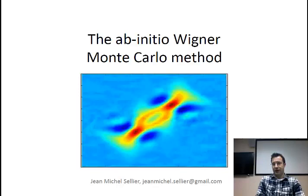In this lecture we will talk about the Ab Initio Wigner Monte Carlo method. This is a Monte Carlo method for the many-body Wigner equation. It is an ab initio method because no physical approximation is introduced and the simulations are based on the first principles of physics.